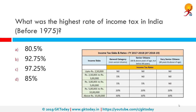What was the highest rate of income tax in India before 1975? The highest it has ever reached is 97.25%. Over the last 70 years, India and its taxpayers have come a long way from the 97.75% being the highest income tax rate to 30%, and from 11 tax slabs to 3.